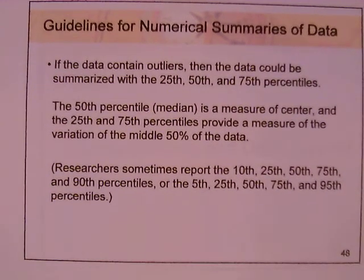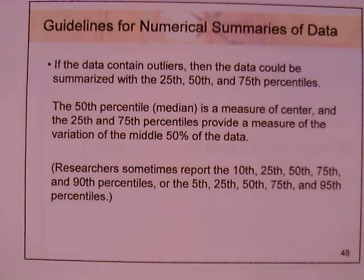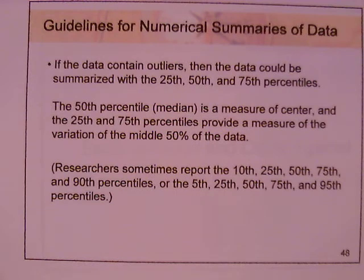If the data contains outliers, it can be summarized with the 25th, 50th, and 75th percentiles. The 50th percentile, the median, is the measure of center, and the 25th and 75th percentiles provide a measure of variation for the middle 50% of the data — the interquartile range, or IQR — calculated as the third quartile minus the first quartile. Some researchers report the 10th, 25th, 50th, 75th, and 90th percentiles, or the 5th, 25th, 50th, 75th, and 95th percentiles.